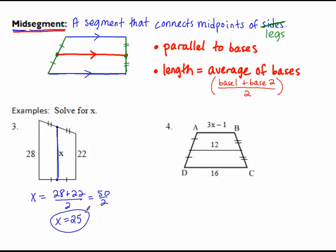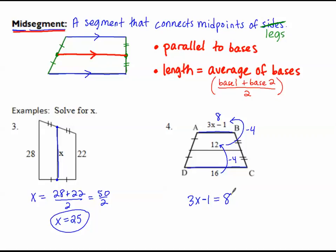For number 4, I already have the mid-segment with length 12. I need to find the missing top base. Going from 16 to 12 is a difference of 4, so going from 12 down by 4 more gives 8. That means 3x minus 1 must equal 8. Add 1 to both sides and divide by 3 to solve for x.